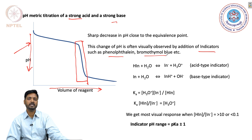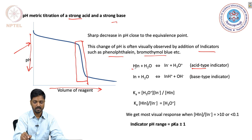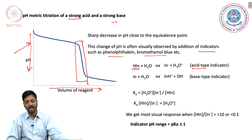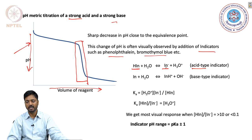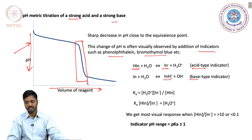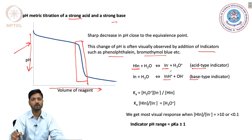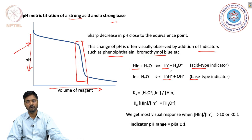It is important to understand that our indicators can be of either acid type, where the indicator is in a protonated form and at appropriate pH it gets converted to an anionic form, or our indicator can be of the base type, where the indicator accepts a proton and converts into a cationic species based on the pH of the medium. The anionic or cationic forms of the indicator have a different absorbance or emission profile, which becomes our indicator of the completion of the titration.